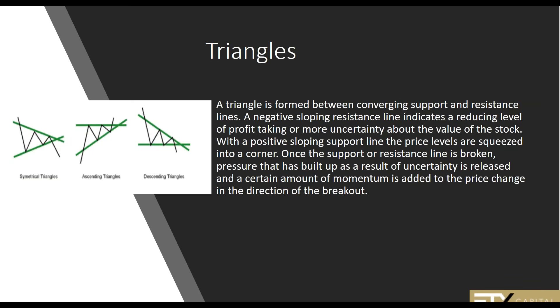The names simply indicate the shape that these price movements are forming. The most popular and the one that happens most often is a triangle, formed between converging support and resistance lines. A negative sloping resistance line indicates a reducing level of profit-taking. With a positive sloping triangle, the price levels are squeezed into a corner. We're looking at pent-up market demand in the corner or center of the triangle, as price moves in and gets smaller and smaller while buyers and sellers become indecisive.